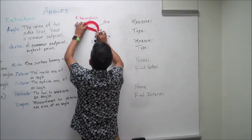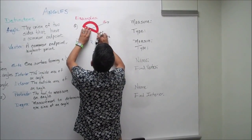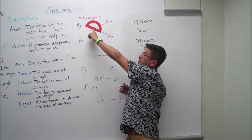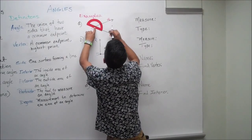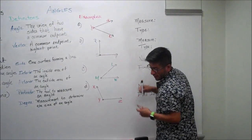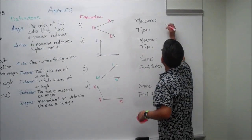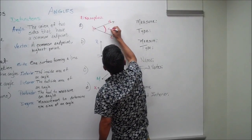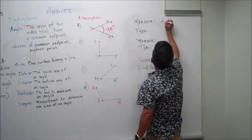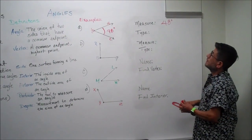You put it like this, right on the vertex, and it should look like this. What we have here, it looks like we have a 48-degree angle. 48 degrees. Now next, it's asking us for what type of angle is this.